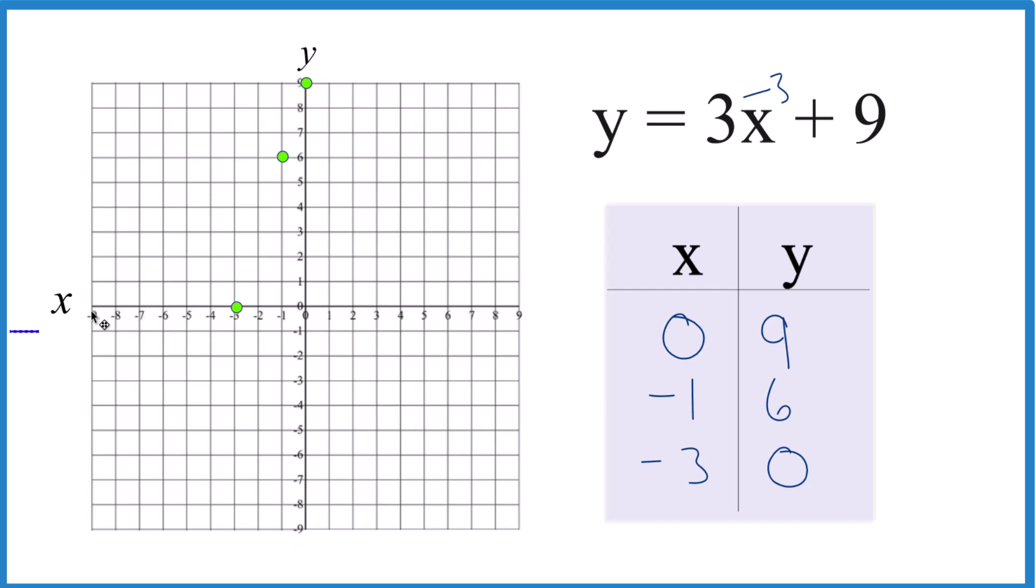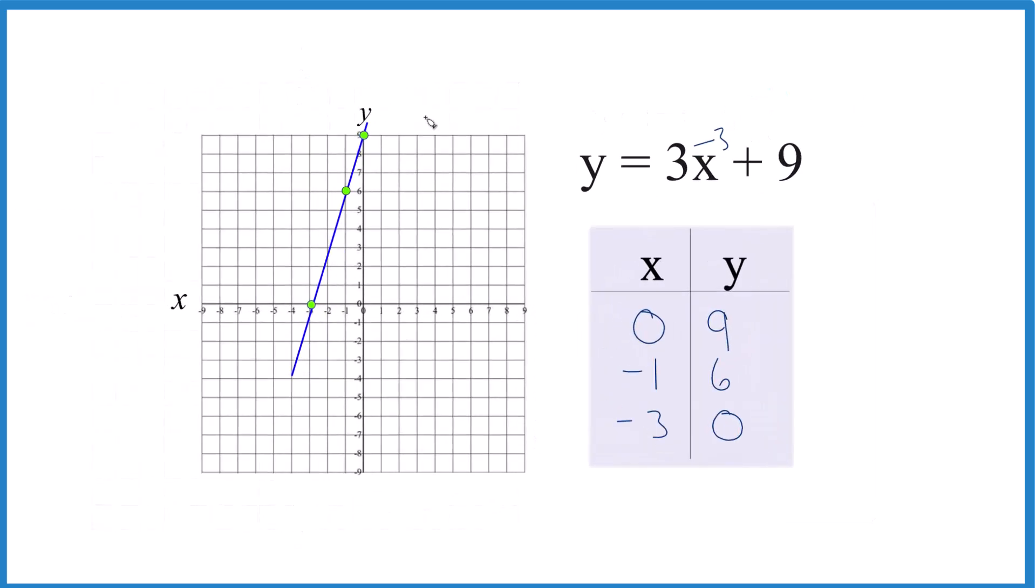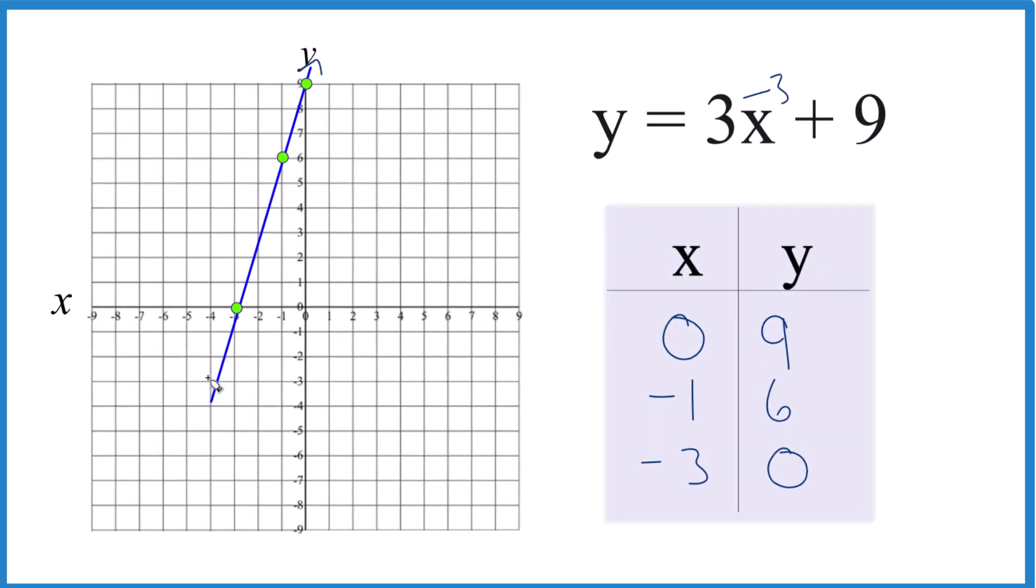And you can see the line. Let's put a line through that. And then we'll put arrows to show that this goes to infinity. So you could keep putting different points in, and they'd all be on the line for y equals 3x plus 9.